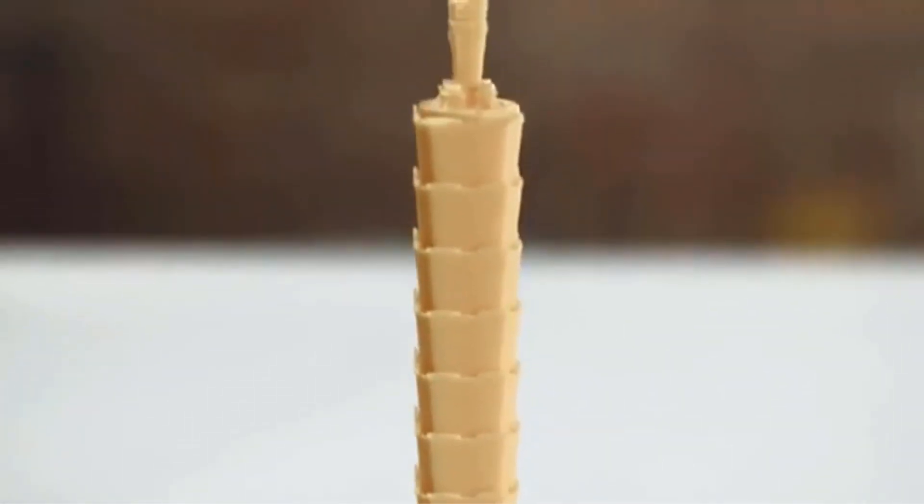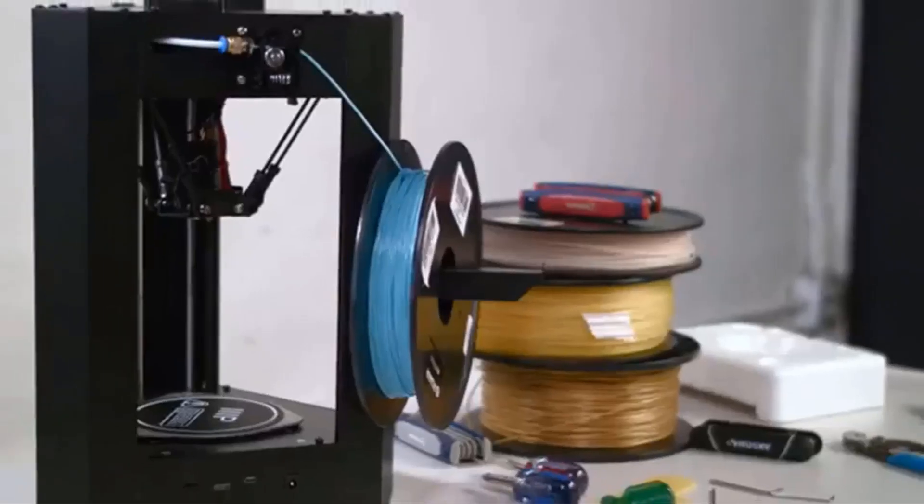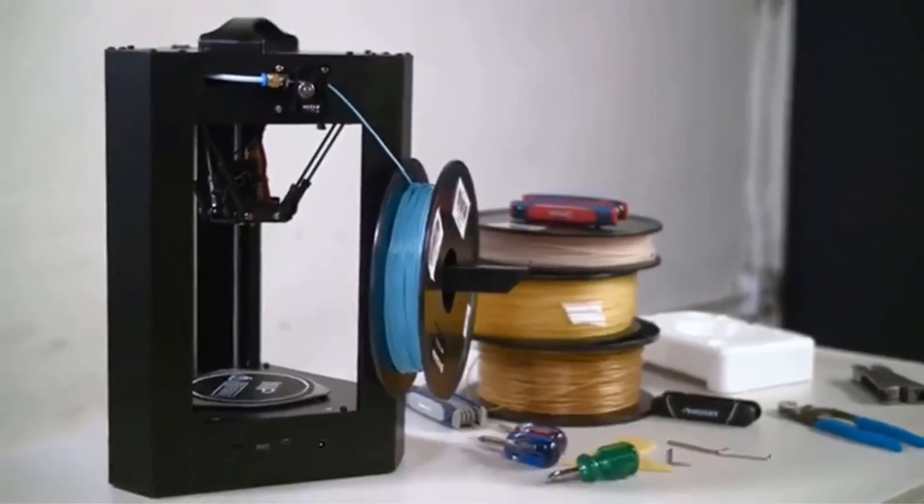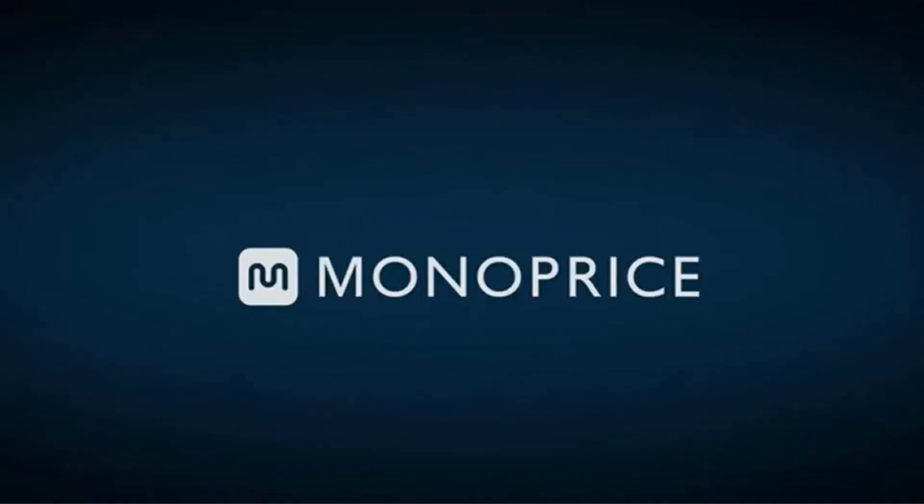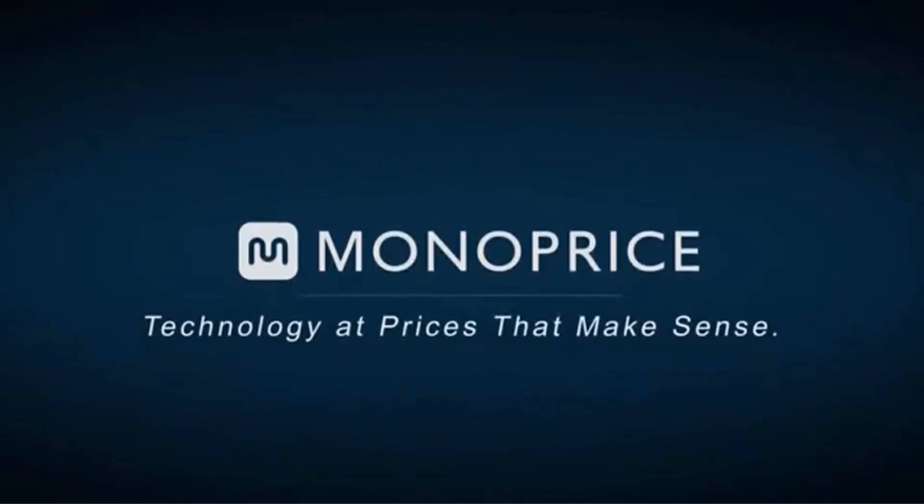The Halot One is equipped with a 5.96-inch monochrome LCD screen with a high resolution of 2560x1620 pixels. With a quick exposure time of 1 to 4 seconds per layer, the printer can significantly improve printing efficiency without sacrificing model detail.